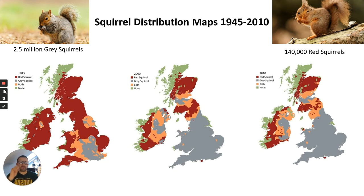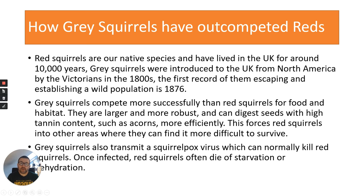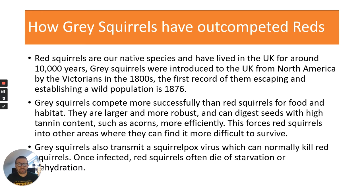A classic example is the grey and red squirrel. Red squirrels are a native species in the UK, around for about 10,000 years, whereas grey squirrels were introduced from North America by the Victorians in the 1800s and developed wild populations in the late 19th century. Grey squirrels compete more successfully for food and habitats - they're larger, more robust, and can digest seeds with higher tannin content such as acorns, utilising more food sources. This forces red squirrels into other areas, particularly where there are spruce and fir trees that grey squirrels don't prefer. Grey squirrels also transmit a squirrel pox virus which they are resistant to but red squirrels are not, and red squirrels often die of starvation or dehydration.